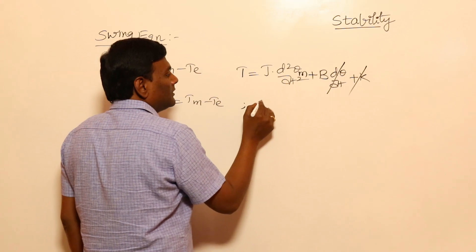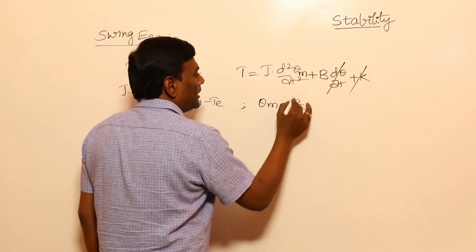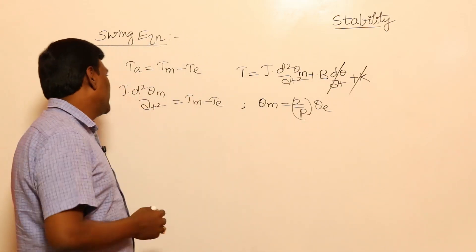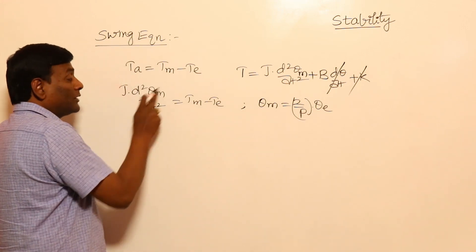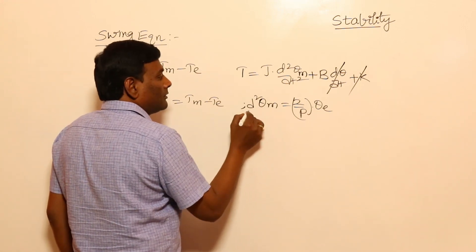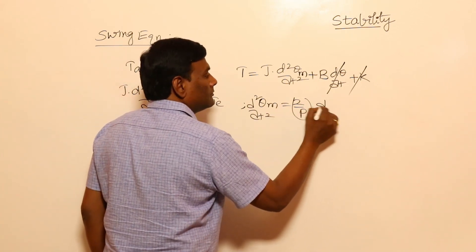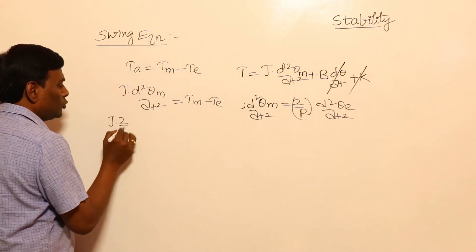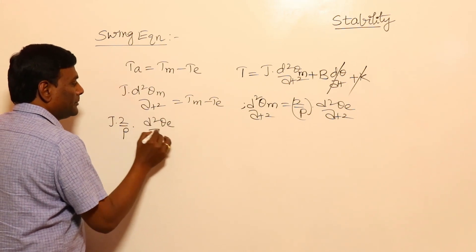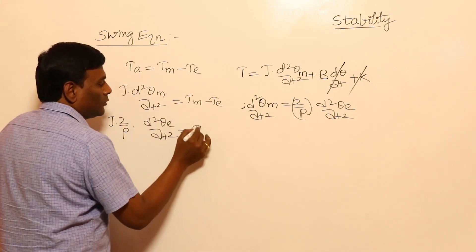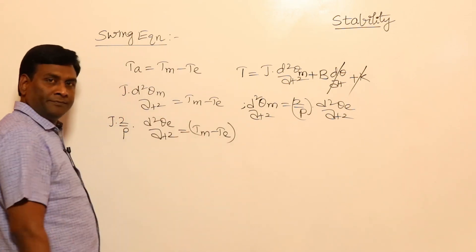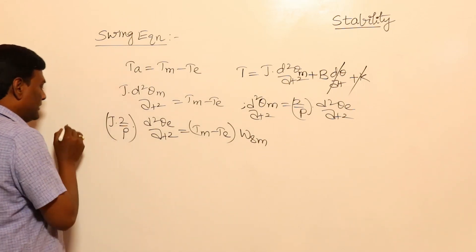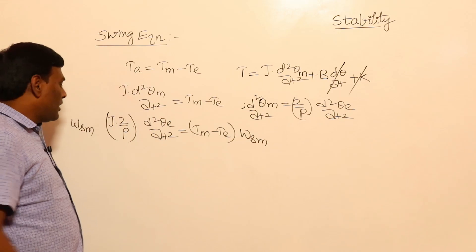The mechanical-to-electrical angle relation is: θ_mechanical = (2/P)·θ_electrical, or θ_electrical = (P/2)·θ_mechanical. Substituting, we get J·(2/P)·(d²θ_e/dt²) = torque.